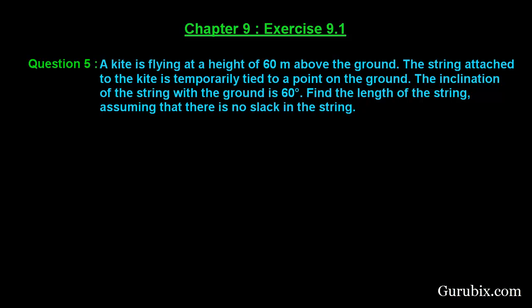The question says: a kite is flying at a height of 60 meters above the ground. The string attached to the kite is temporarily tied to a point on the ground, and the inclination of the string with the ground is 60 degrees. We need to find the length of the string, assuming that there is no slack in the string.